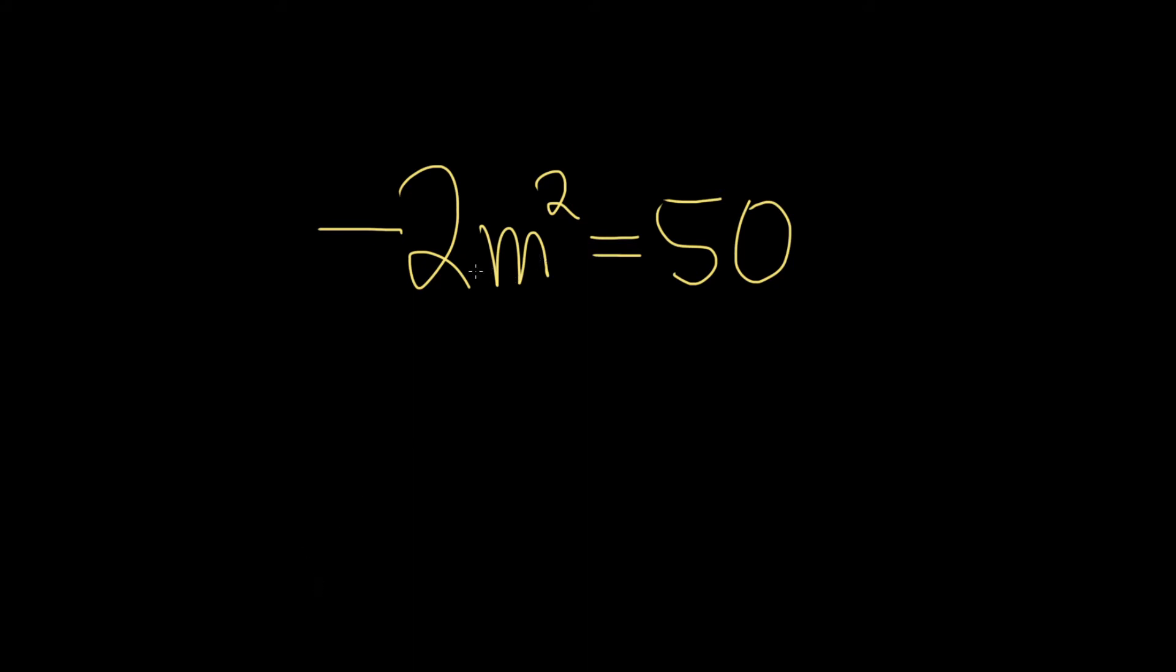It's being multiplied by negative 2, so as a good first step, we'll divide both sides by negative 2. So we have m squared equals negative 25.